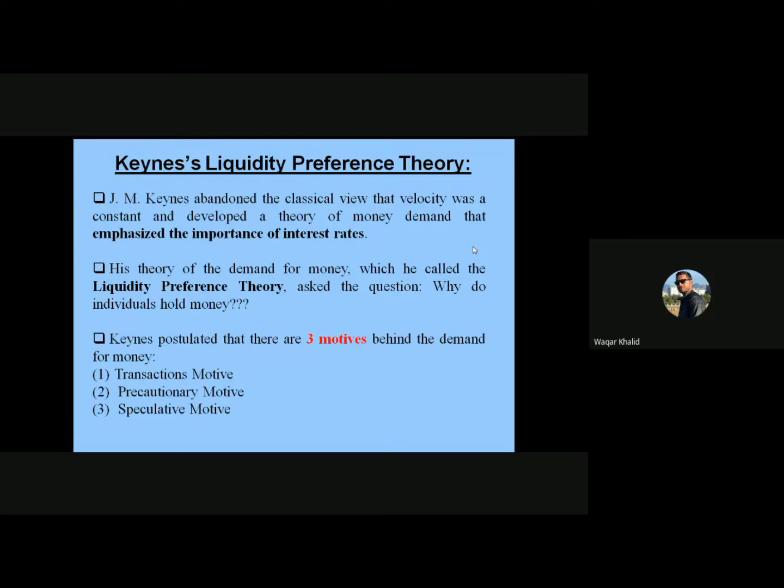The liquidity preference theory asks the question: why do individuals hold money? J.M. Keynes presented three motives. The first one is known as the transactions motive, the second is the precautionary motive, and the third is the speculative motive.